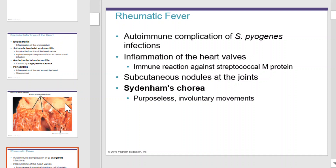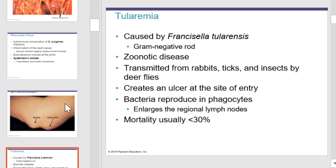Tularemia is caused by Francisella, which is a gram-negative rod. This is a zoonotic disease transmitted from rabbits, ticks, and deer flies. It creates an ulcer at the site of entry. The bacteria reproduce in phagocytes and enlarge the regional lymph nodes. The mortality is usually less than 30%.